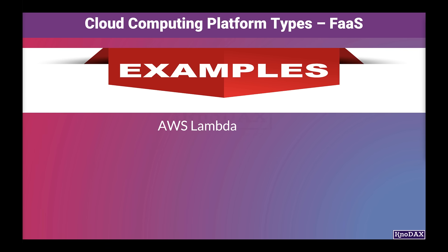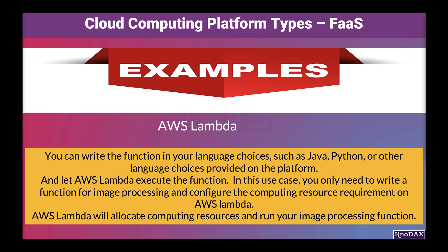One example of Function as a Service is AWS Lambda. For example, say you have an image processing function for generating thumbnail images. You can write the function in your language of choice, such as Java, Python, or other language choices provided on the platform, and let AWS Lambda execute the function.